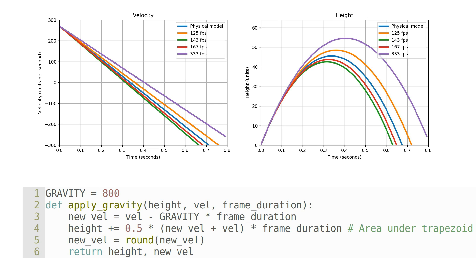333 fps is clearly coming out on top, with the usual 125 fps close behind. In fact, 333 fps is the optimal frame rate.